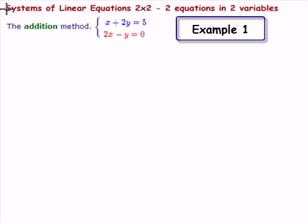In this MathCast, we're looking at systems of linear equations two by two. What does that mean? It means that we have two linear equations in two variables.